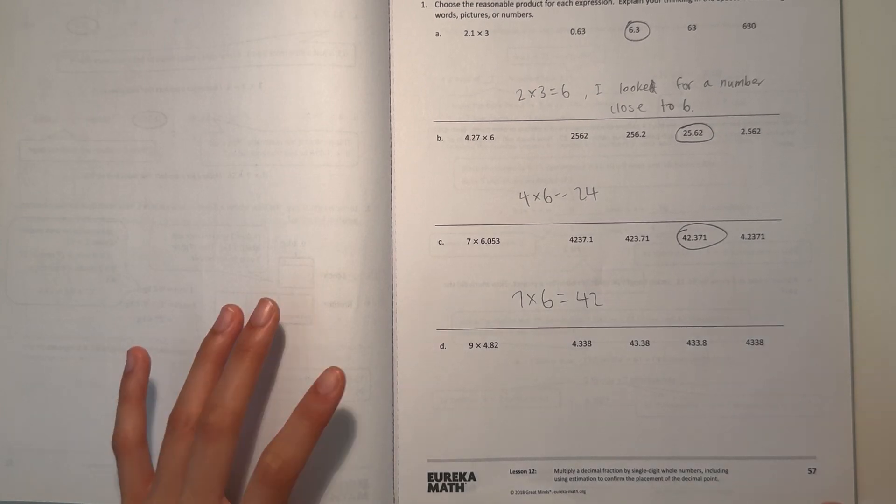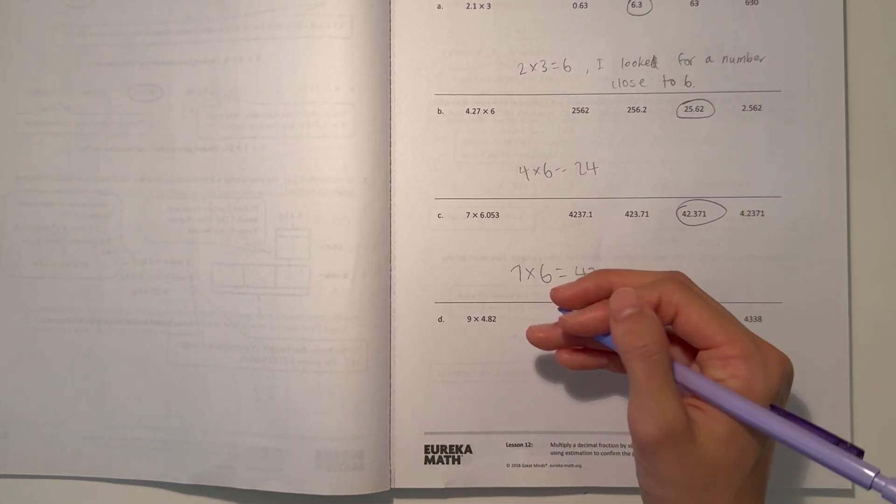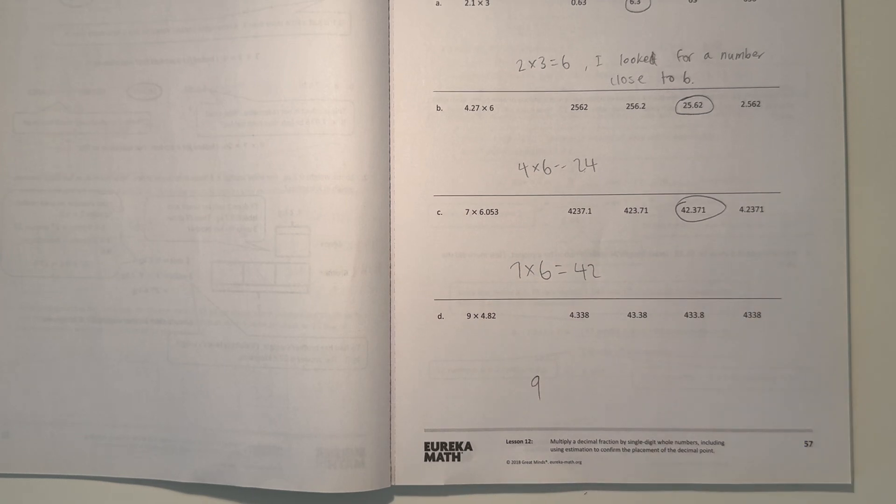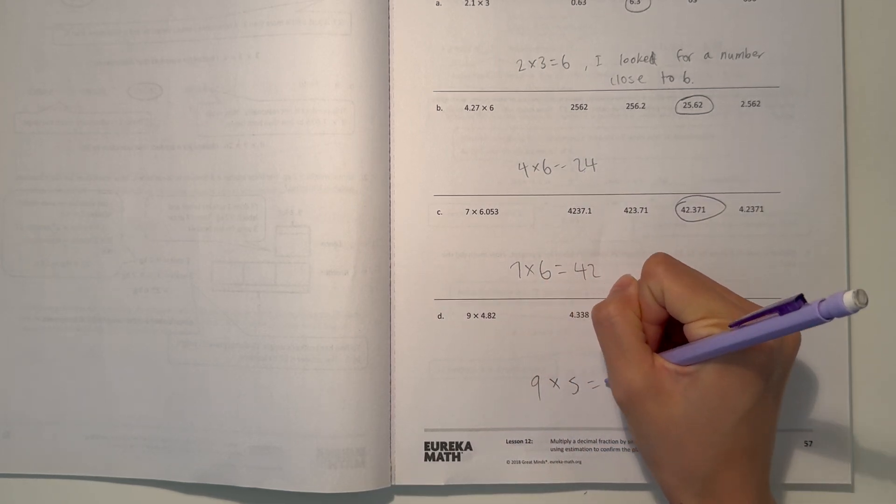And then D, we have 9 times 4.82. So 9 times 4.2. We know that 4.82, if we round that number, it's kind of around 5. It's closer to 5 than it is to 4. So we can do 9 times 5, which is 45.